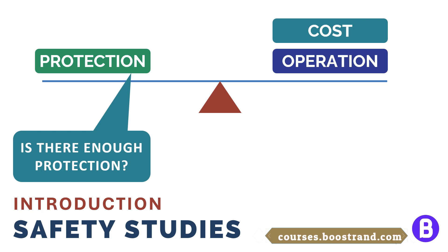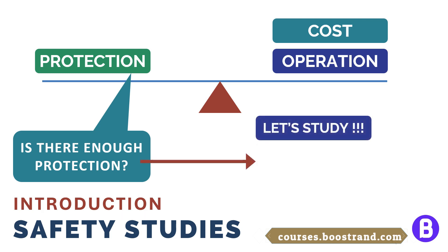That's why, in most projects, a hazard and operability session — or in other words, HAZOP — is conducted. Through this session, the project team from different backgrounds sit with each other, identify the risks and project deviations in each portion of the plant. They shall also check if the design addresses the upset scenarios with proper safeguards, and if it doesn't, then they shall add applicable recommendations in order to fix these scenarios and respond to them properly.